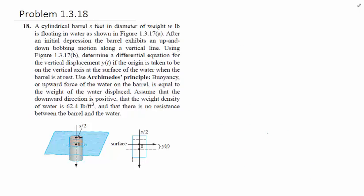Let's take a look at the next problem. The next problem will still use the same ideas from Newton's law and apply Archimedes' principle. We have a cylindrical barrel, S feet in diameter, and then the weight is W pounds. It's floating in the water as shown. After you press it down under the water, the barrel exhibits an up and down bobbing motion along the vertical line. So this is the vertical line, and this is the offset after it got pushed down. Determine differential equation for the vertical displacement Y. If the origin is taken in the vertical axis at the surface of the water when the barrel is at rest.